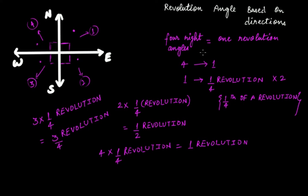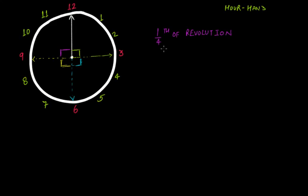Clearly, this rotation of the hour hand from 12 to 3 is making a right angle. One right angle is equal to one fourth of a revolution, that is one-by-four revolution — when your clock moves from 12 to 3.